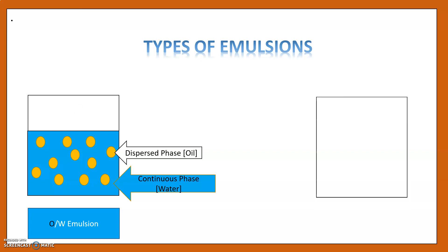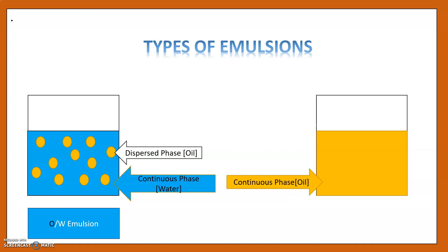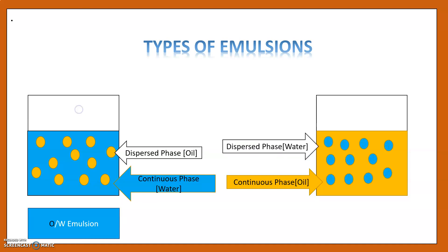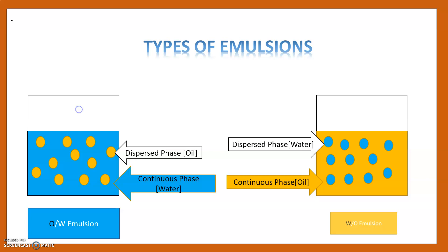In the second type of emulsion, the oil is present in the continuous phase and the water is present in the dispersed phase. Hence, we call it the W/O type of emulsion.